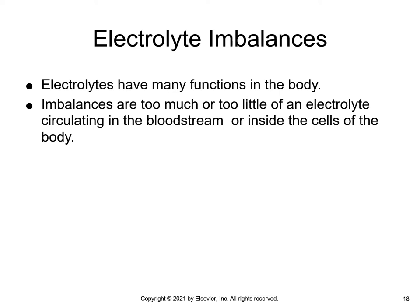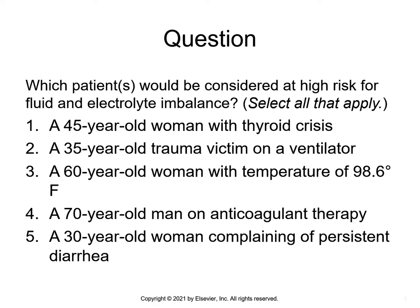Which patient would be considered at risk for fluid and electrolyte imbalance? Select all that apply: A 45-year-old woman with thyroid crisis, a 35-year-old trauma victim on a ventilator, a 60-year-old woman with a temperature of 98.6 degrees Fahrenheit, a 70-year-old man on anticoagulant therapy, a 30-year-old woman complaining of persistent diarrhea. The correct answer is 1, 2, and 5.